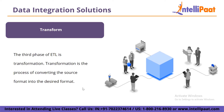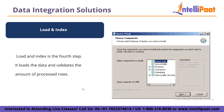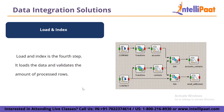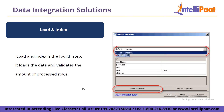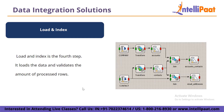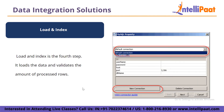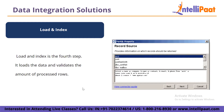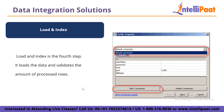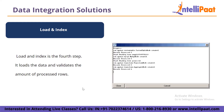Then we have load and index, which is the fourth step. It loads the data and validates the amount of processed rows. After data has been loaded, indexing is employed to keep track of the amount of rows placed into the data warehouse. Indexing also aids in determining whether or not the data is in the correct format.